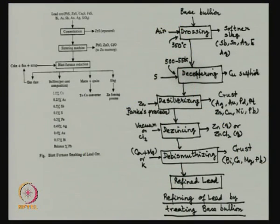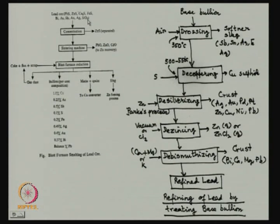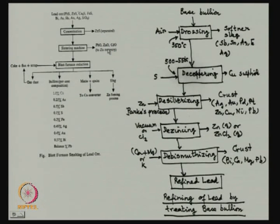Looking at the flow sheet: we start with lead ore that is mostly lead sulphide, which always contains some zinc sulphide, possibly some copper, definitely iron sulphide, and other impurities — some valuable. After concentration, most of the zinc sulphide can be separated by differential flotation. In the sintering machine we produce the blast furnace feed sinters. During the process, some fumes — ZnO, PbO, etc. — will go out for zinc recovery. In the blast furnace reduction process, we add coke plus flux plus some iron scrap for recovery of lead.